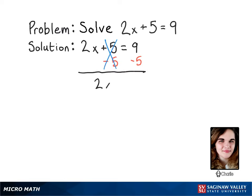Now all that's left on the x side is this 2x. And what's left on the other side of the equal sign, 9 - 5, is just 4.